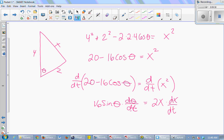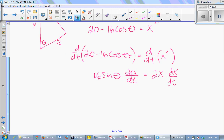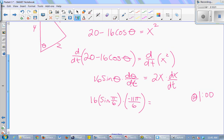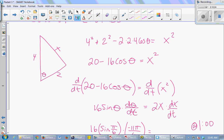Now we plug in the stuff we know at 1 p.m. Or it doesn't matter actually, right? At 1 o'clock, right? What is theta when the hour hand is at 1 and the minute hand is at 12? 30 degrees or π/6? Yeah, because the metric is right. Yeah. Yep. So this is going to be 16 times the sine of π/6 times d(theta)/dt, which we calculated earlier to be negative 11π/6, equals 2x. Oh, what is the length of x at 1 o'clock?